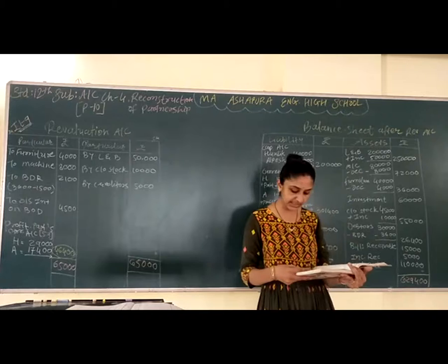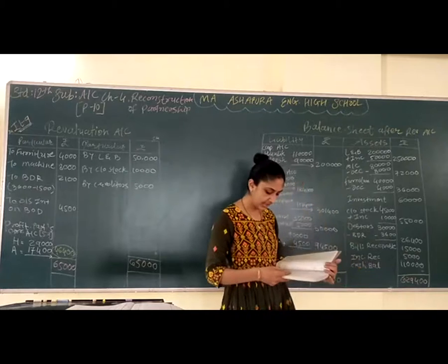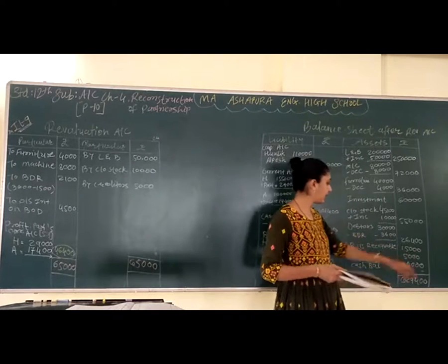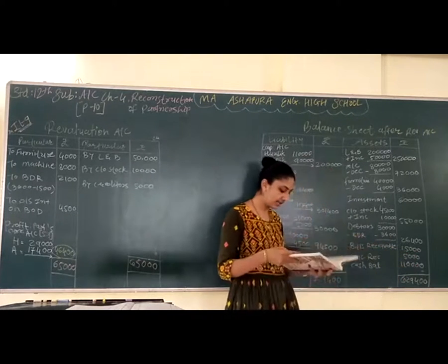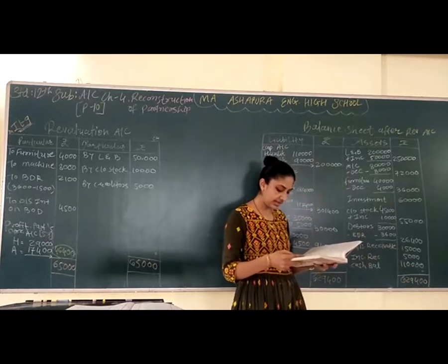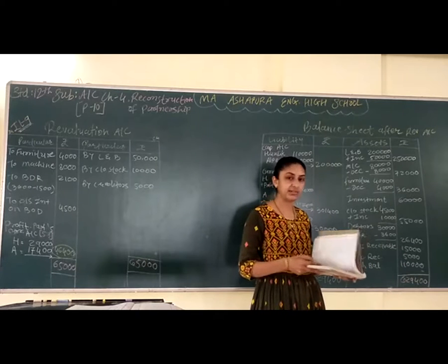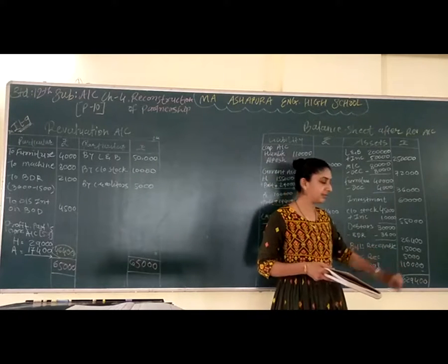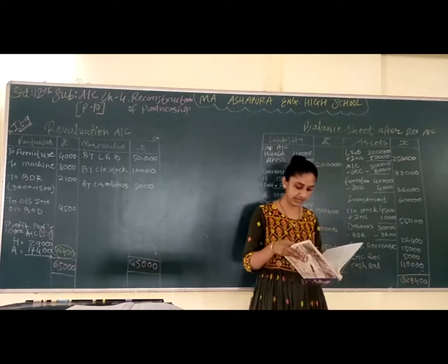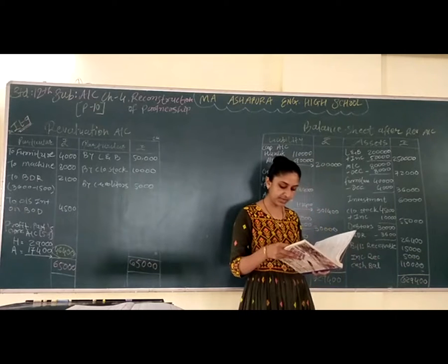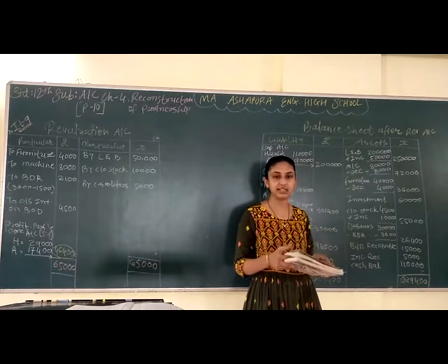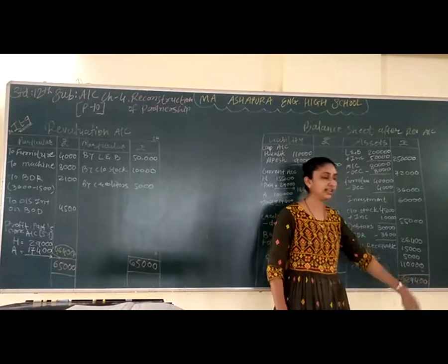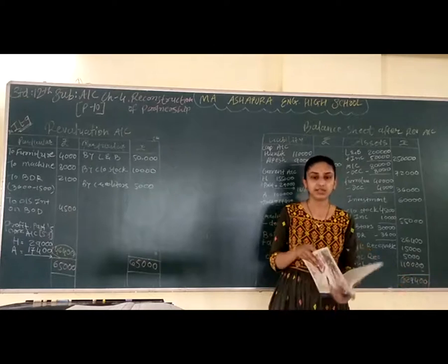Uske baad hai bills receivable — kuch changes nahi hain, as it is 15,000. Uske baad hai income receivable — no change, income receivable is 5,000. And last is cash balance — there is no change in cash balance, so it is 10,000.